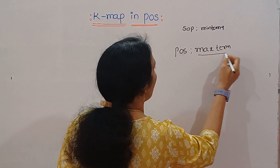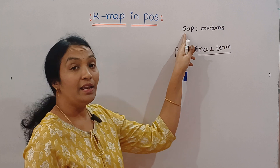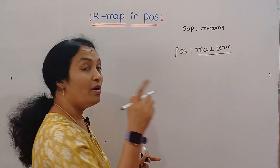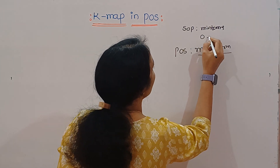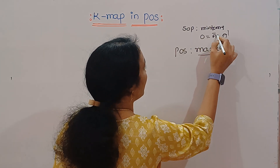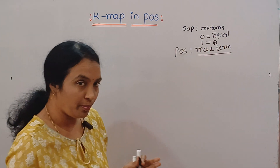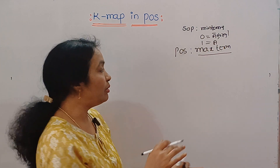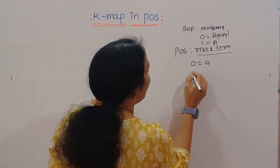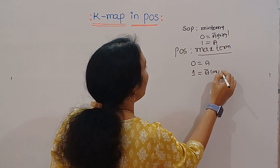In SOP, we do grouping with A. In SOP, 0 represents with A bar — we can find A complement. 1 is the actual variable. But in POS, 0 represents with A and 1 represents with the complement — A bar or A complement.